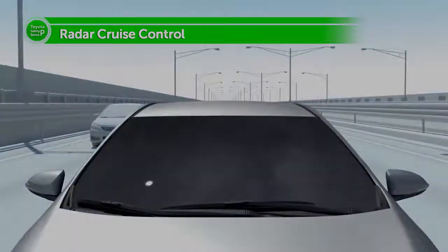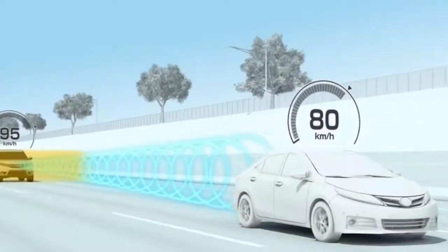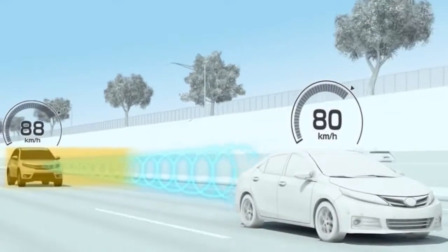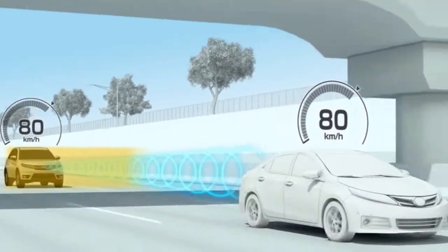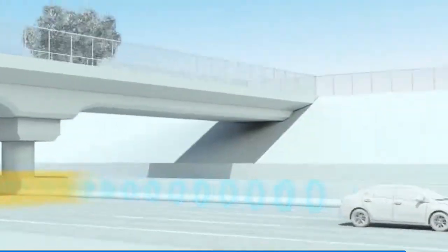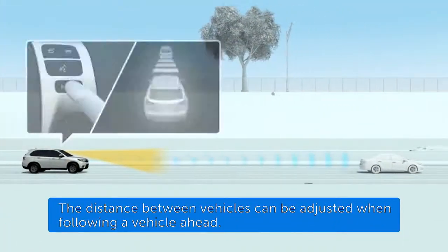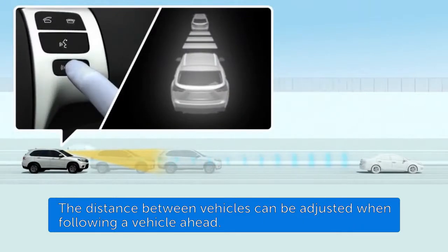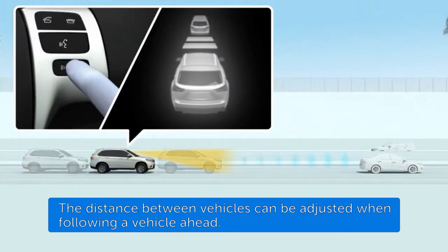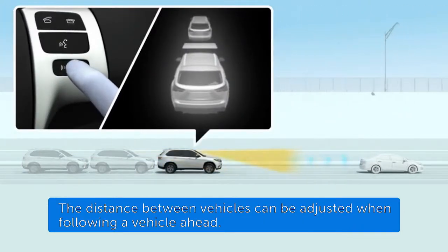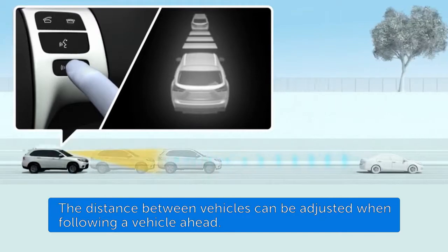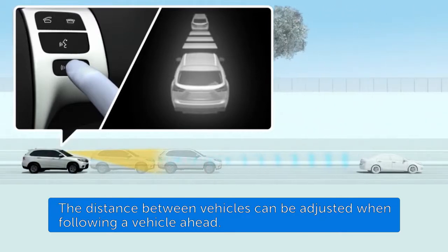The vehicle-to-vehicle distance, or distance between your vehicle and preceding vehicle, can be set by operating the vehicle-to-vehicle distance control. Pressing the button allows the driver to choose from three vehicle-to-vehicle distance settings.